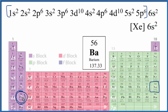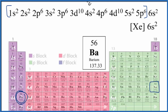Writing condensed electron configurations, also called abbreviated configurations, really helps us see the valence electrons clearly and saves us a lot of time — rather than writing out the full configuration each time, we can just write [Xe] 6s2 for barium.